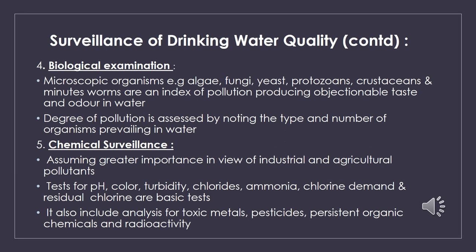Chemical surveillance is assuming greater importance due to industrial and agricultural pollutants finding their way into raw water sources. The basic tests run for chemical surveillance are for pH, color, turbidity, chlorides, ammonia, chlorine demand, and residual chlorine. A complete chemical analysis would also include analysis for toxic metals, pesticides, persistent organic chemicals, and radioactivity.